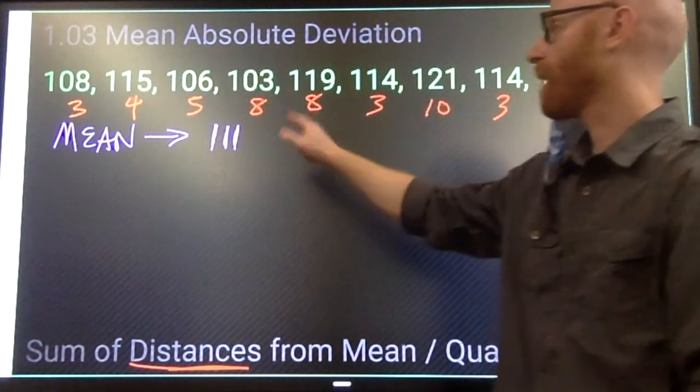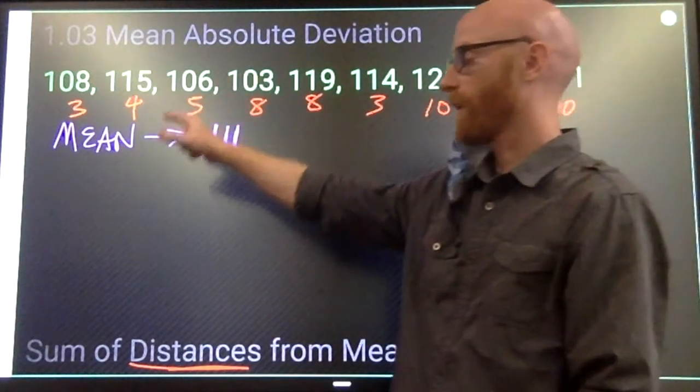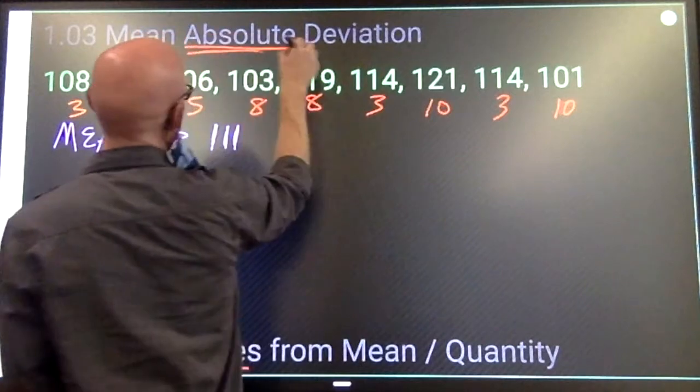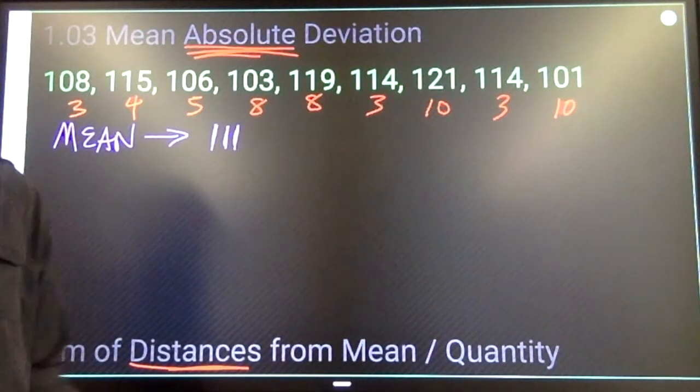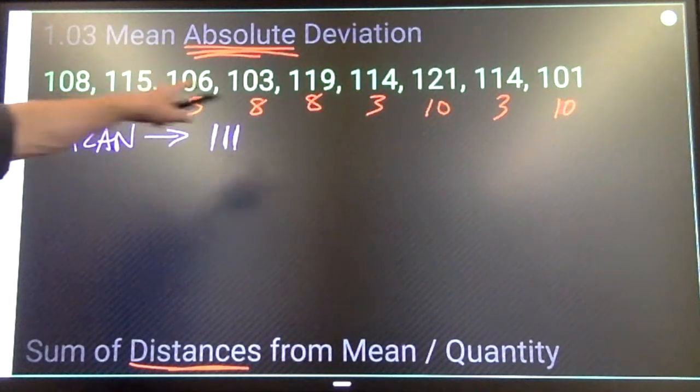If you are using a calculator to subtract to find your distances, if you do 108 minus 111 you'll get negative 3 from the calculator, you're still gonna write positive 3. That's what this word absolute means - always take a positive answer when we're finding distances.